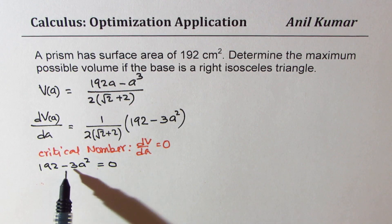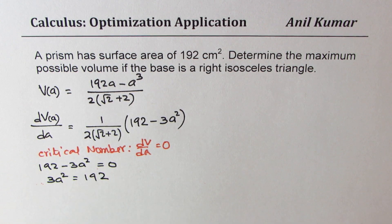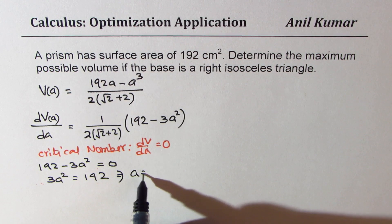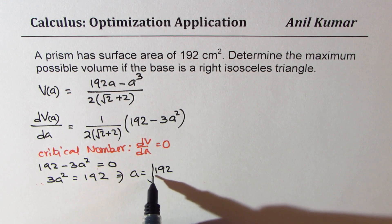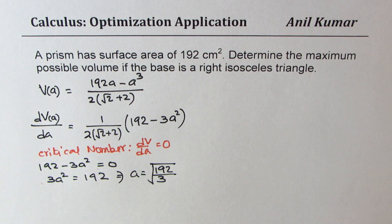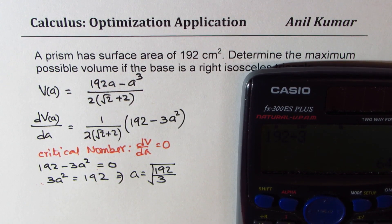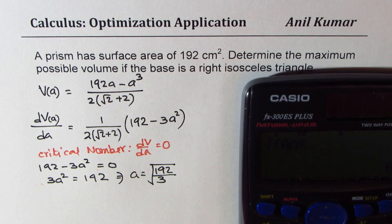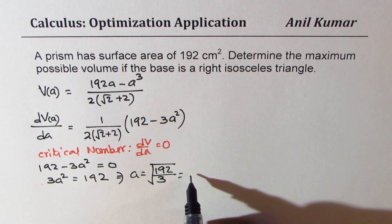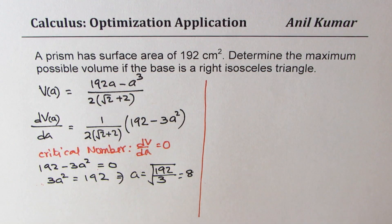So that means this portion 192 minus 3a square equals to 0. From here we can always find what a is. So 3a square equals to 192. And that gives you a as square root of 192 over 3. Now this is, let's divide, 192 divided by 3 is 64. And square root of 64 is 8. So we get 8 as the value of a. So we have found the value of a. And now we can calculate what maximum volume could be.